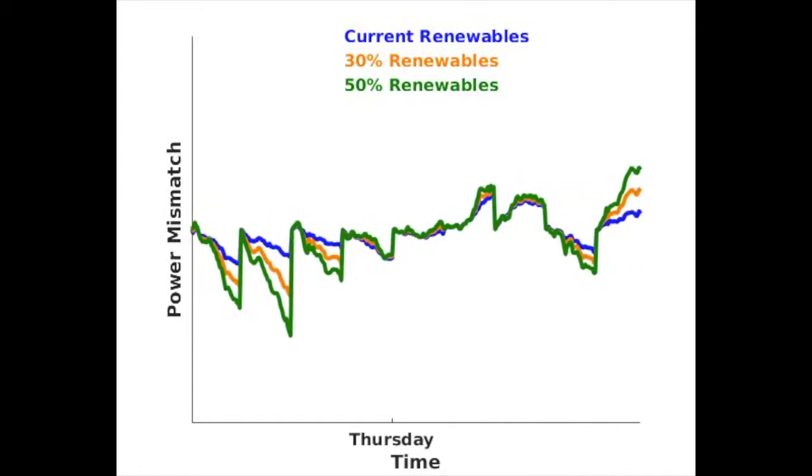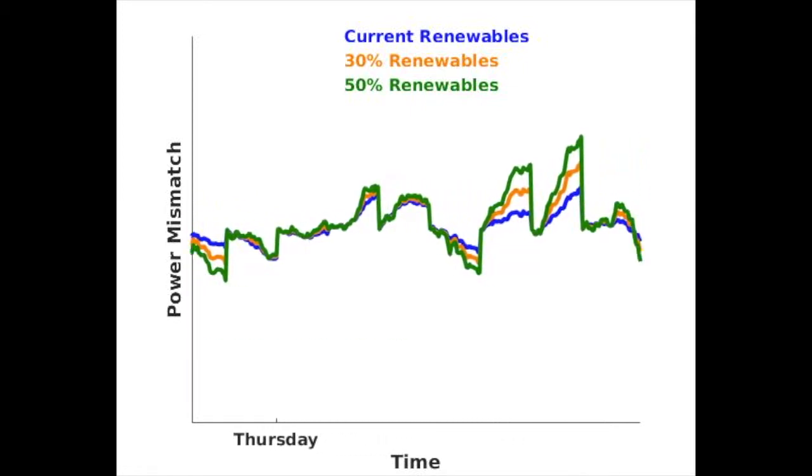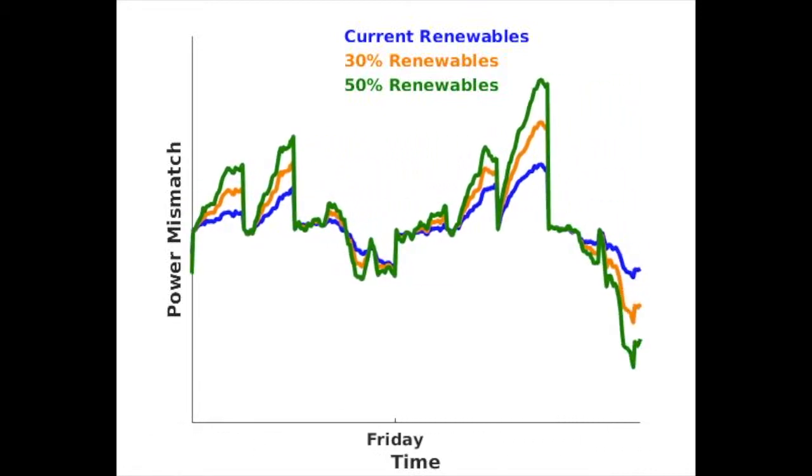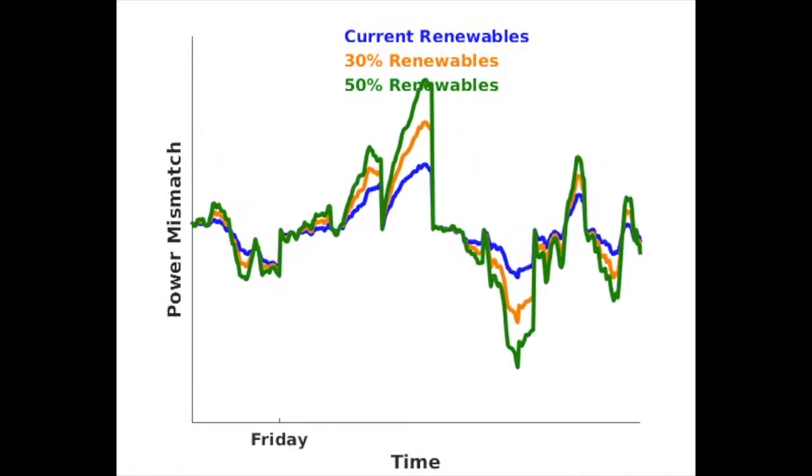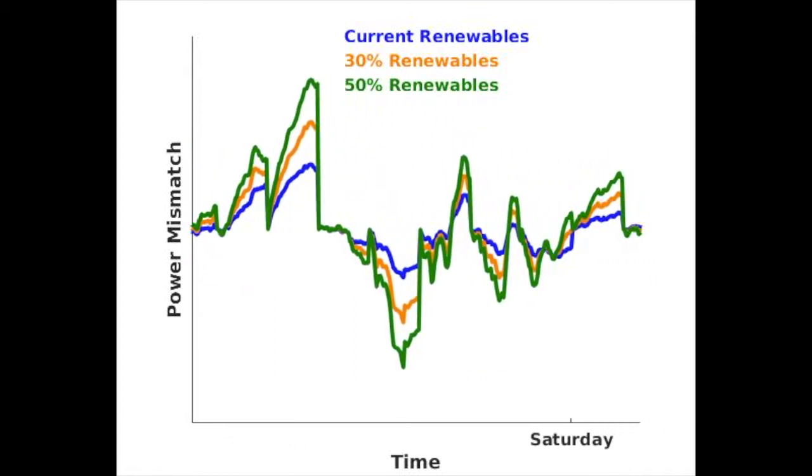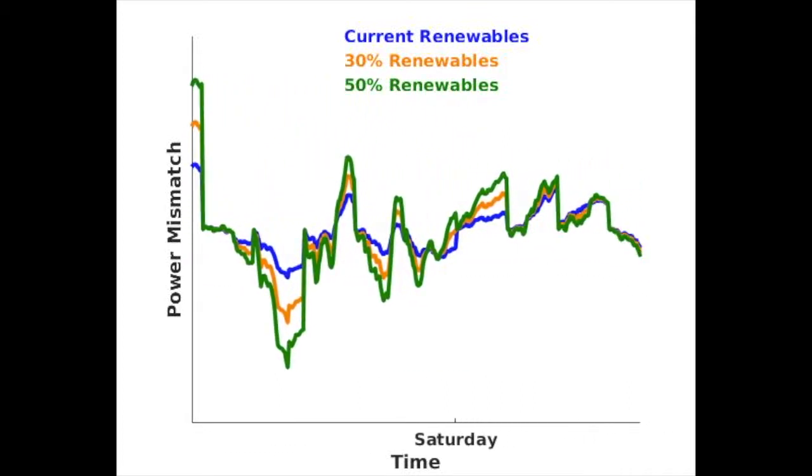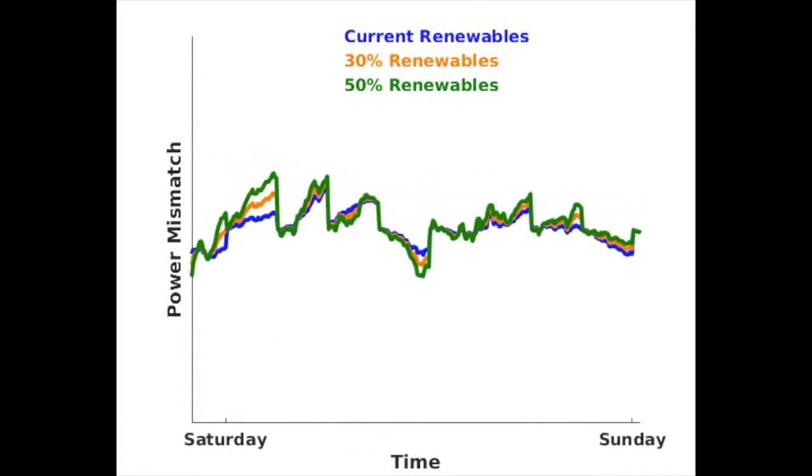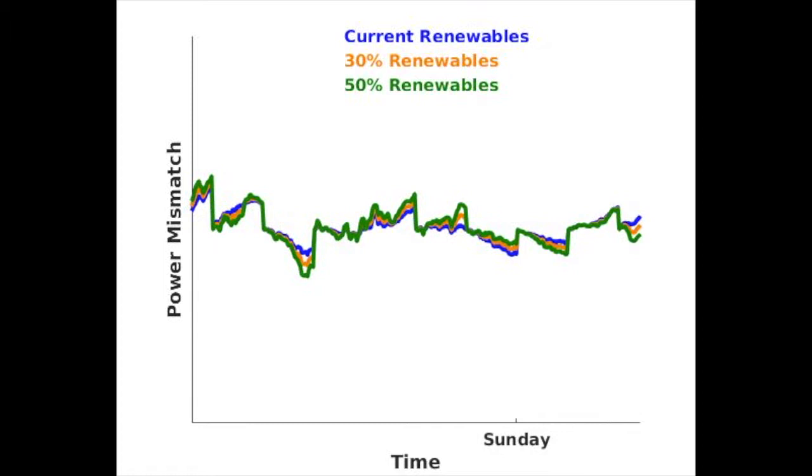There are two approaches to compensate for this mismatch. The first approach is to use batteries, but batteries are expensive. The second approach is to slightly change the way loads consume power so that the consumption matches with the generation from renewable sources, but in such a way that consumers do not feel any difference. This second approach is a lot cheaper than batteries.